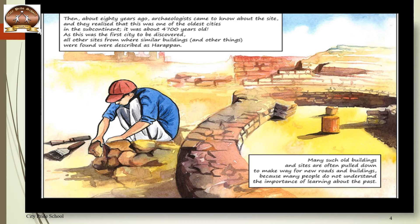Now, when people find such ruins or remains at certain sites, they often abolish them for construction of new roads and apartments, because people don't understand the importance of learning about our past. When we learn about our past, we come to know about so many different things. As we proceed, you will also come to know about the type of construction and materials that the people of the Indus Valley Civilization used.